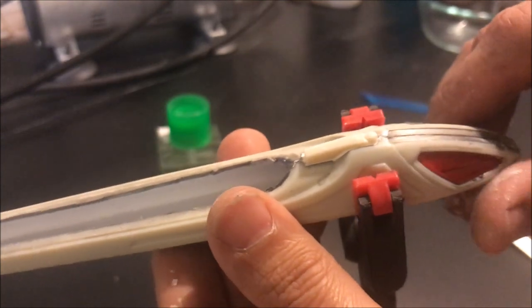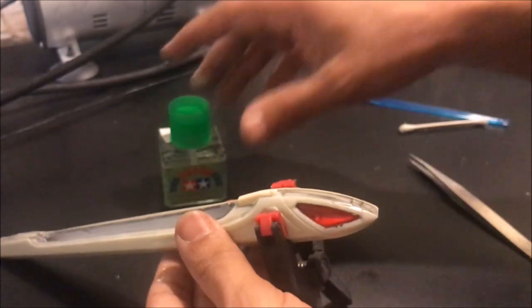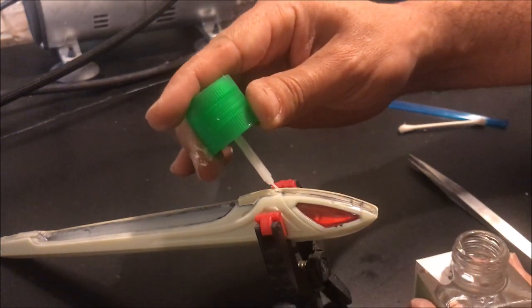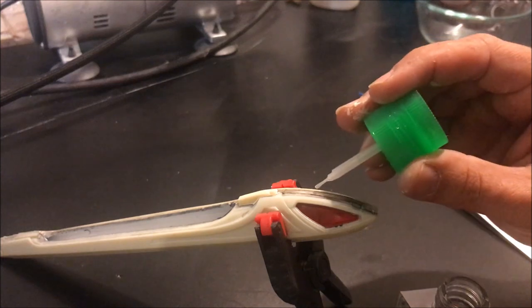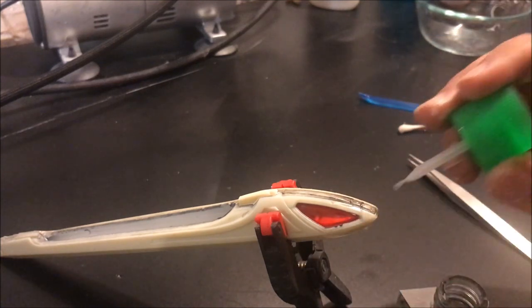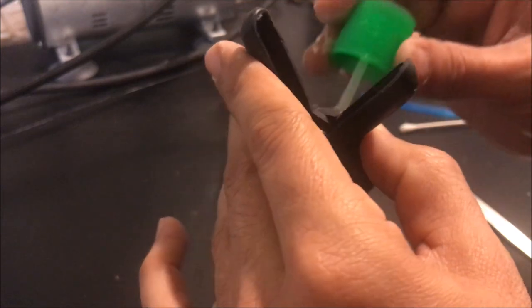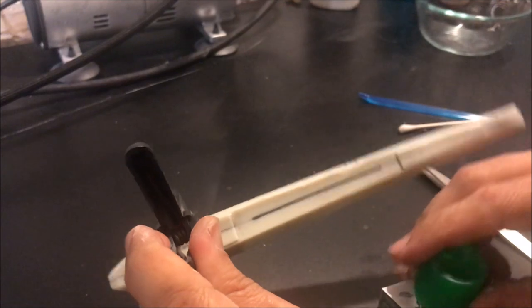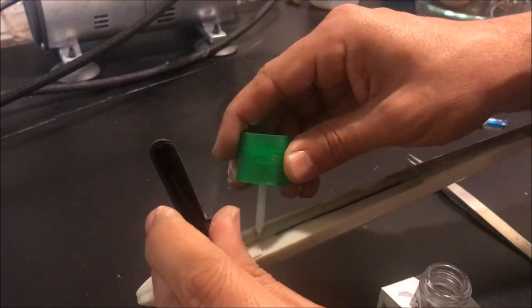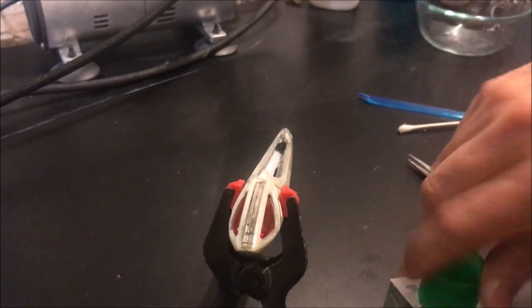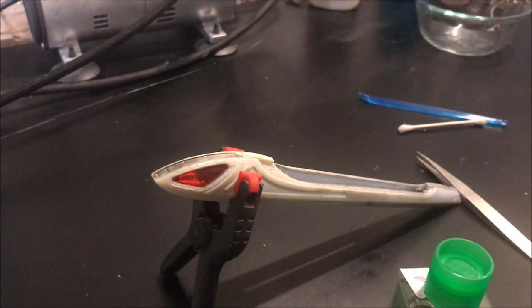That way is just gonna seal those cracks perfectly. Now that I've got it clamped, we're gonna use our Tamiya liquid cement. We're gonna run liquid cement over the seams. The clamp will gently press it. Overall we'll have to just do a little bit of sanding to make sure that bottom part is nice and smooth. Now we're going to let that sit and let it dry.